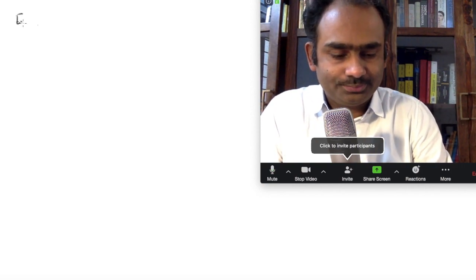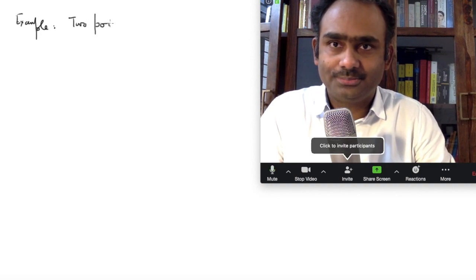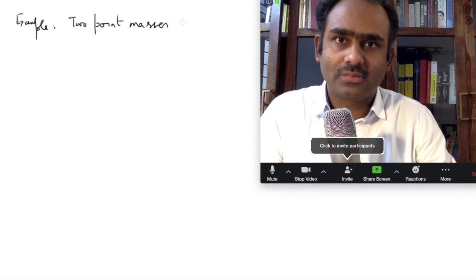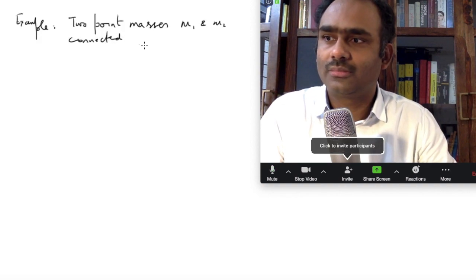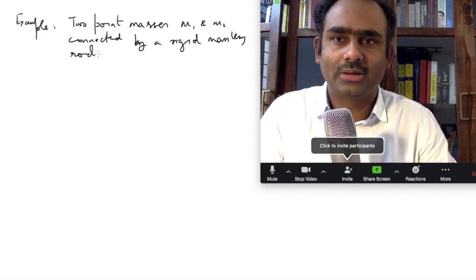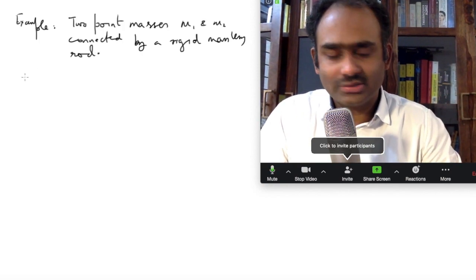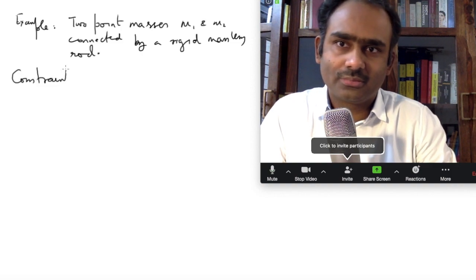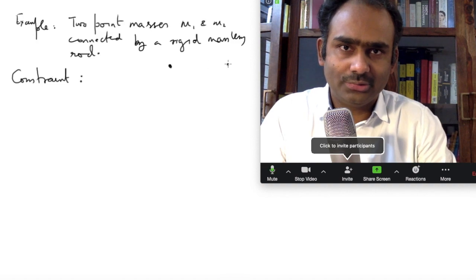Our example is: I have two point masses m1 and m2, and they are connected by a rigid massless rod. The system is really the two particles; the rod is just a fiction to help imagination. So what is the constraint we have? Let us look at the two particles m1 and m2, and the distance between them is let us say a.